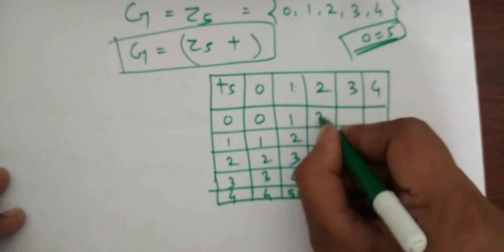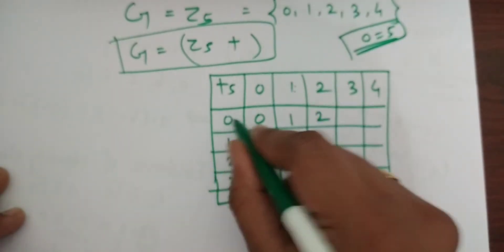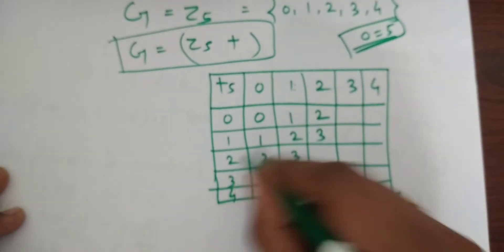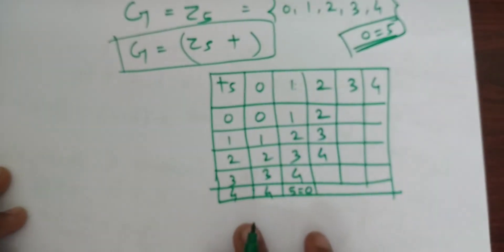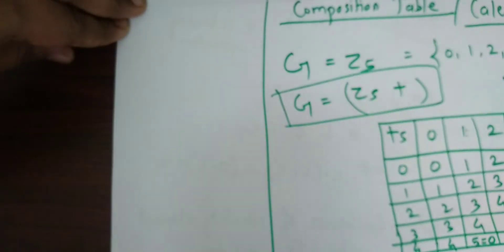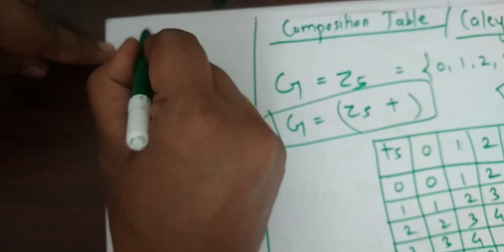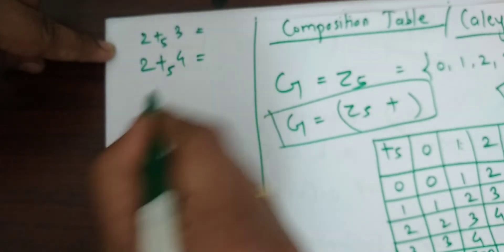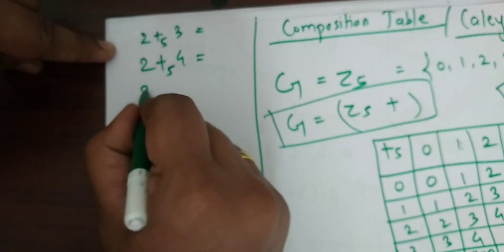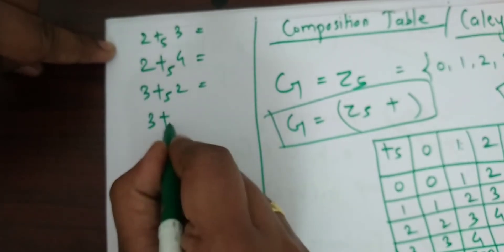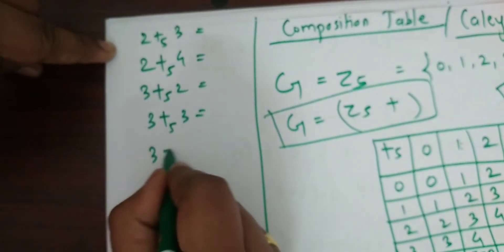2 plus 0 is 2. 2 plus 1 is 3. 2 plus 2 is 4. 2 plus 3 — we also have to write 3 plus 2, 3 plus 3, 3 plus 4, and 4 plus 4 — all under addition modulo 5.